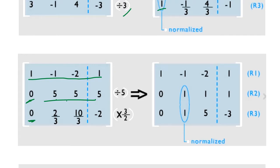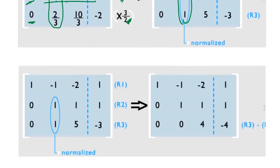When it happens, then we normalize this place. This is normalized by divide by 5 and multiply by 3 over 2. Once it's normalized, then we subtract this again.